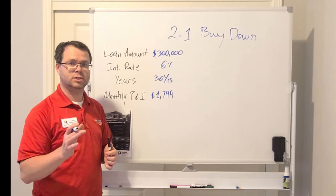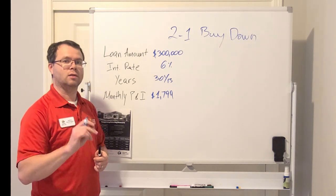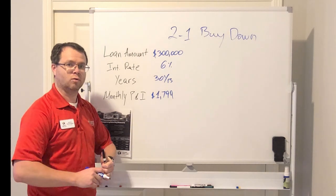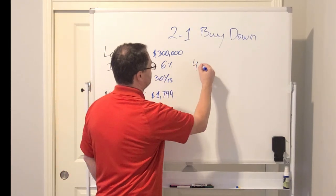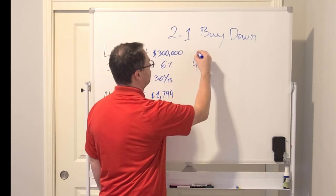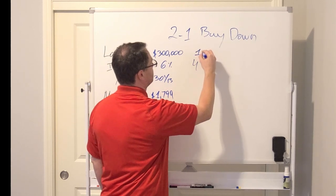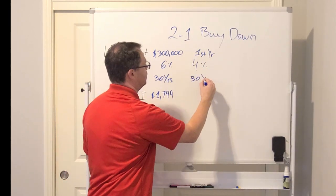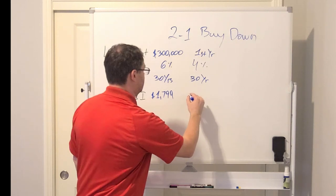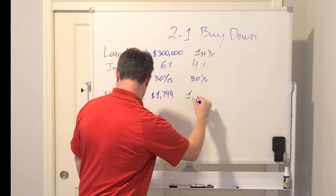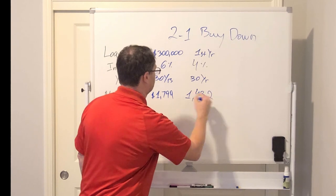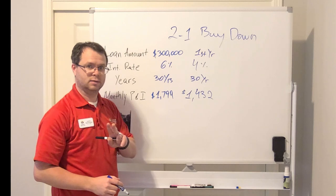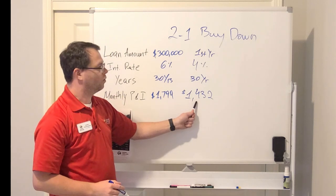As we mentioned, for the first year of your mortgage, the rate will be reduced by 2% when you go with a 2-1 buy-down program. So 4% is going to be your first year interest rate. We still have a 30-year mortgage and your payment is going to be $1,432. So for the first 12 months, you will be paying $1,432.